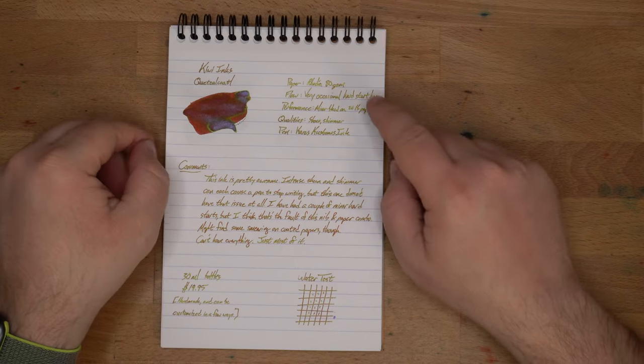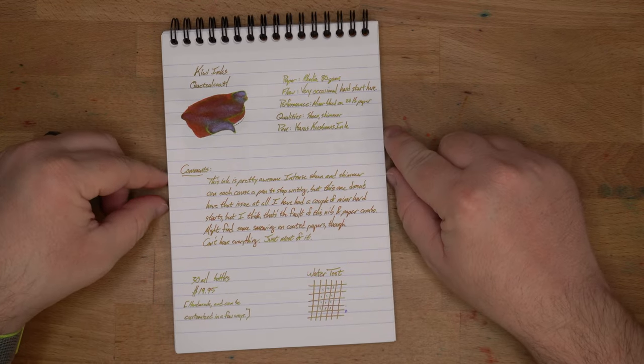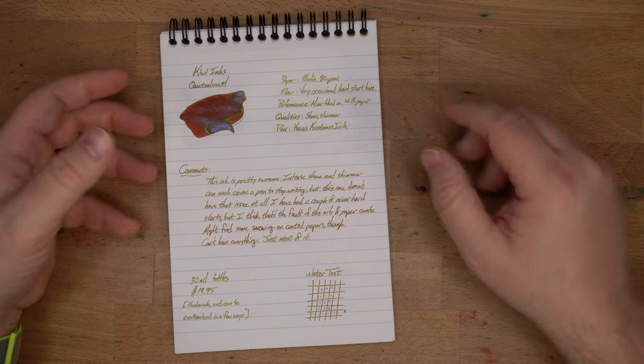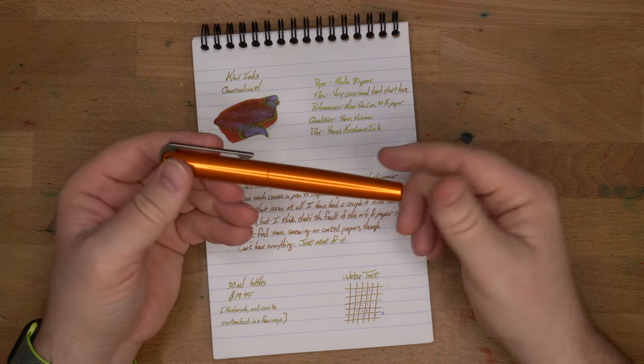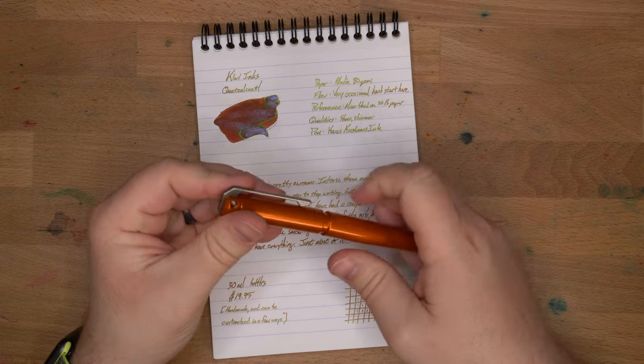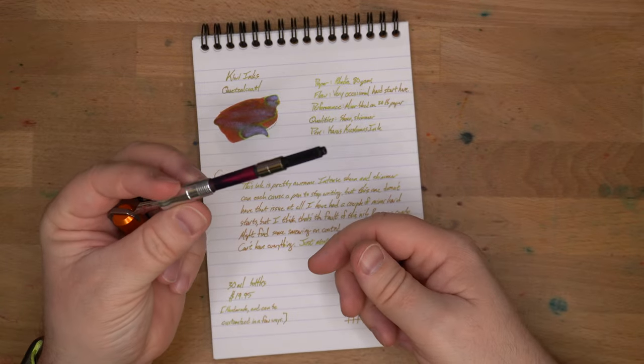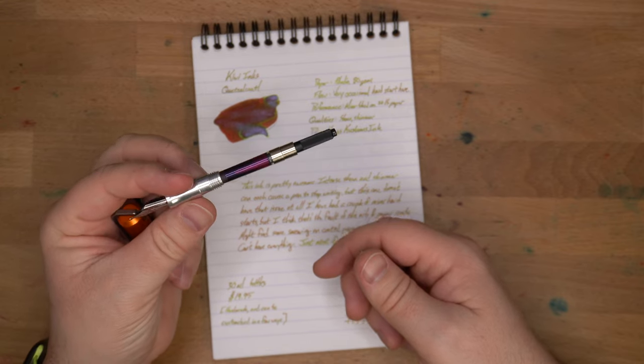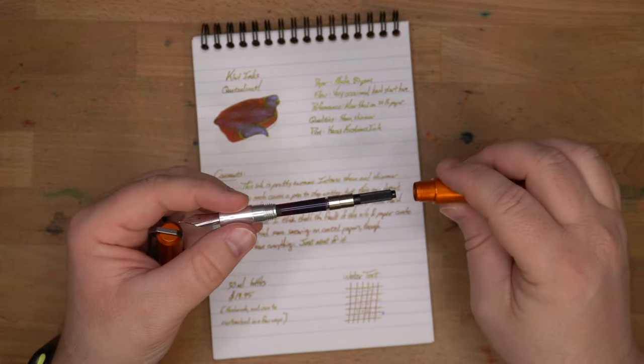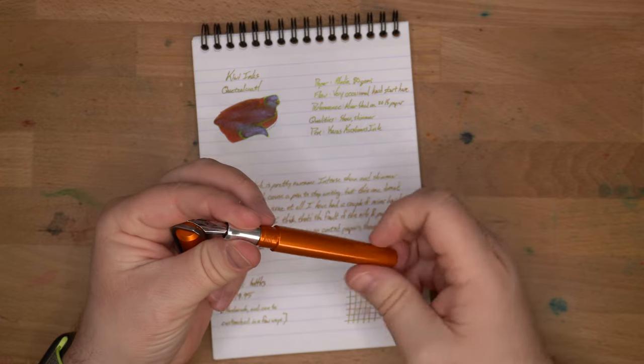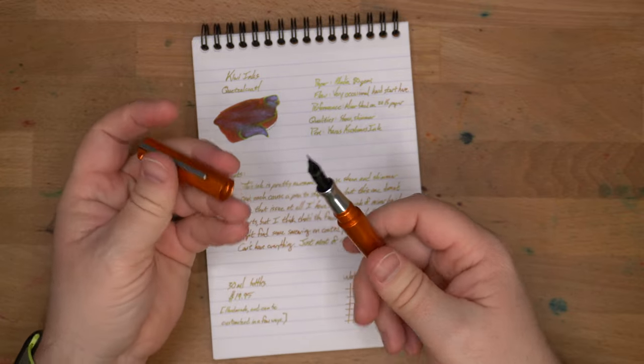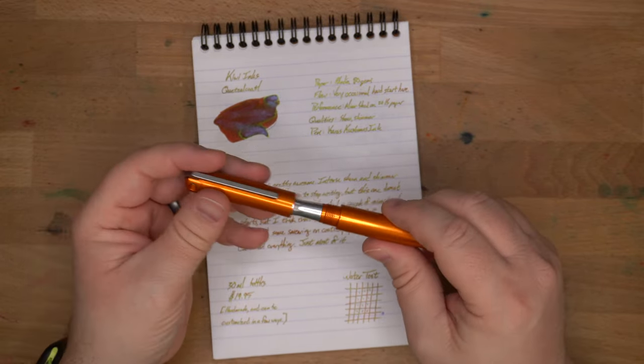And it's true, that is true about it on all kinds of papers. This is my normal Rhodia 80 grams per square meter paper. The flow here, I say there's a very occasional hard start. Very occasional. I have maybe had two or three hard starts on there. Maybe I got a hard start the day I wrote that little bit there and I was like, it's hard starting a little bit, but in general, fairly wet. And I haven't had any problems except for maybe once or twice. It's not persistent.